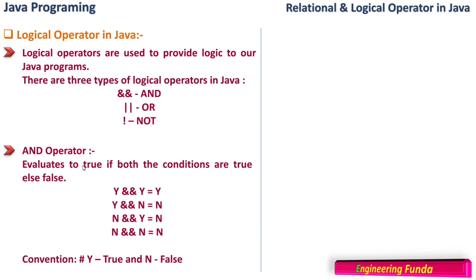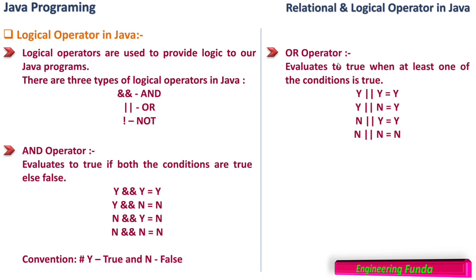The AND operator evaluates to true only if both conditions are true, otherwise it gives false. If the first condition is true and the second condition is true, AND results in true; else it results in false. If any one of the conditions in the AND operator is false, the result is false. For AND to be true, both conditions must be true.